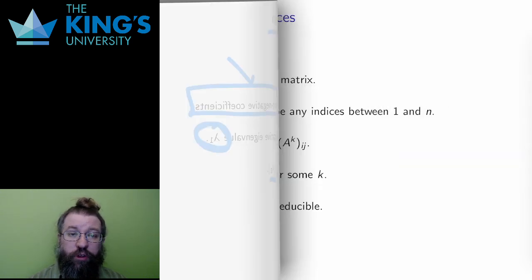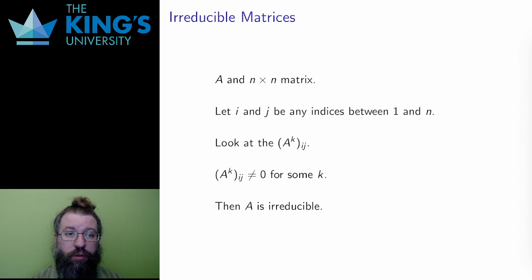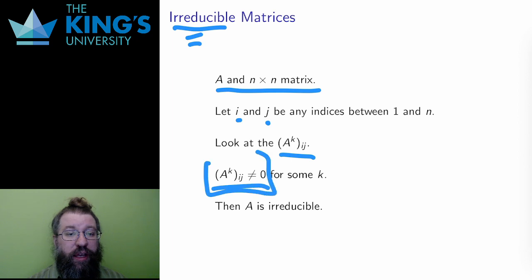The stronger version of this theorem needs a new definition. Let A be a matrix. A is called irreducible if for all i and j there exists some positive integer such that the ij-th entry of A to the n is non-zero. That's a bit of a strange thing, but this definition roughly captures the idea that all the coefficients in the states are somehow related.